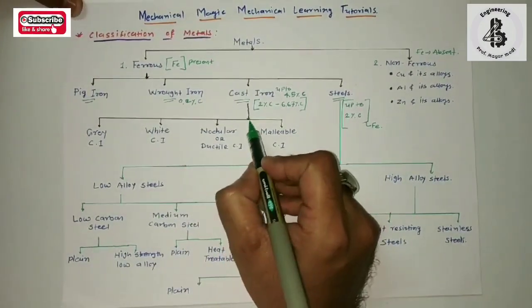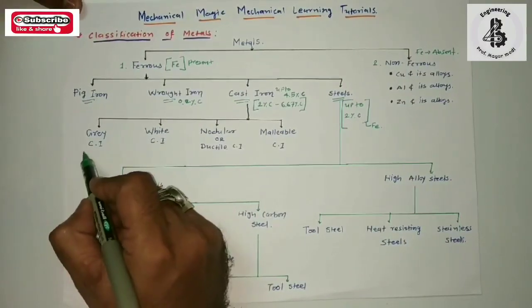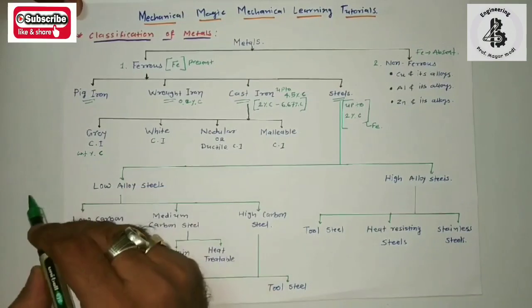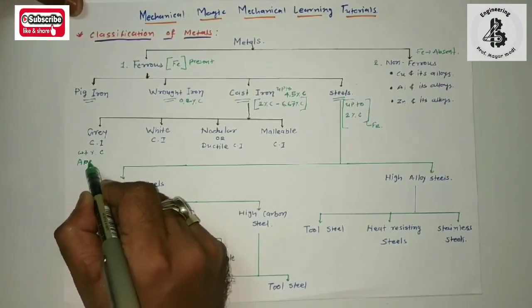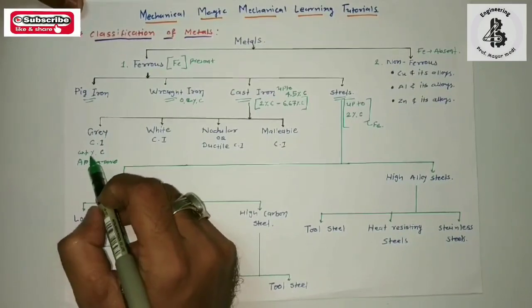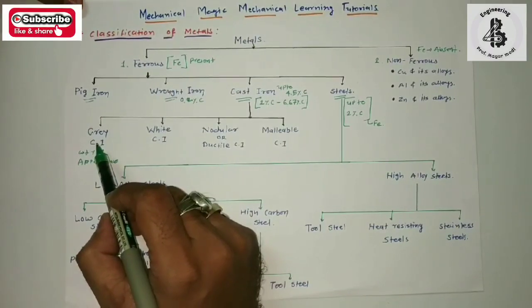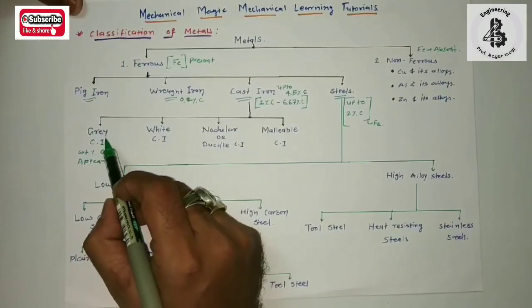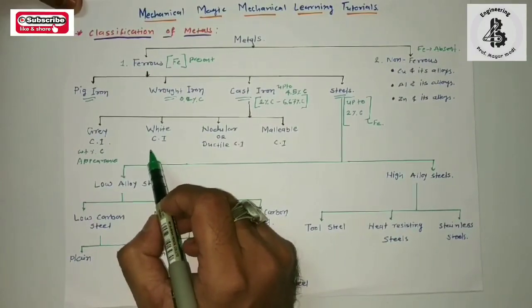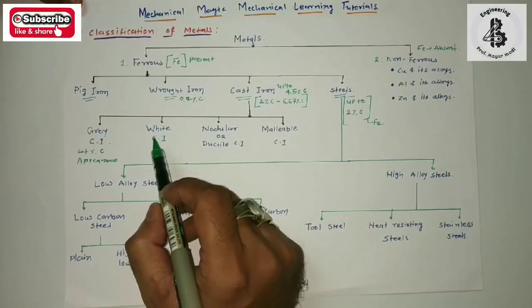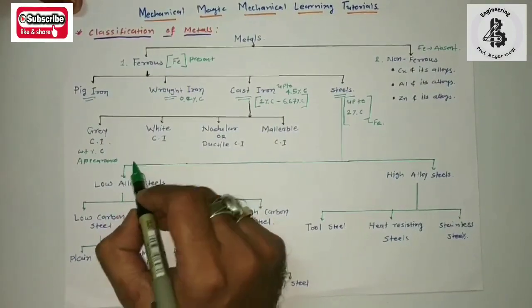Now discussing cast iron materials: classification depends on the weight percentage of carbon and appearance, or color codes. Taking a cross-sectional area of the material: gray cast iron — the carbon converts into graphite flakes giving a gray color. White cast iron — a higher amount of carbon is present, converting into white flakes, giving the cross-sectional area a white color or white appearance.